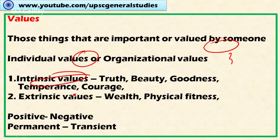Values can be divided into two broad categories: intrinsic value and extrinsic value. Intrinsic values are an end in themselves — these are the final destinations. They include truth, beauty, goodness, temperance, and courage. These are not means to an end; they are ends in themselves. Extrinsic values, like wealth, physical fitness, or earning money, are means to achieve a certain end. For example, wealth may be a means to achieve a happy life — that is an extrinsic value.